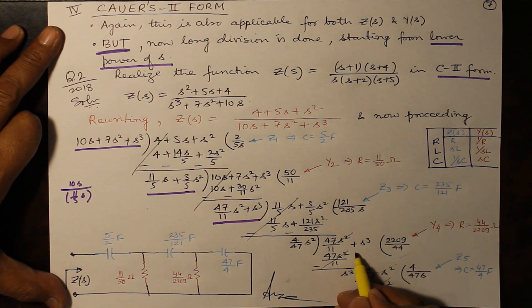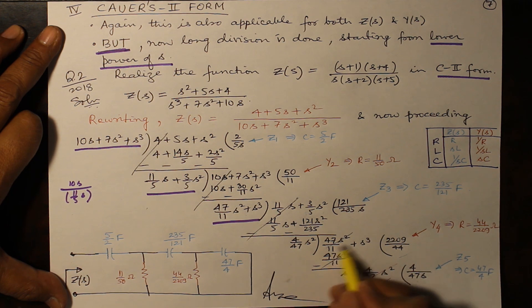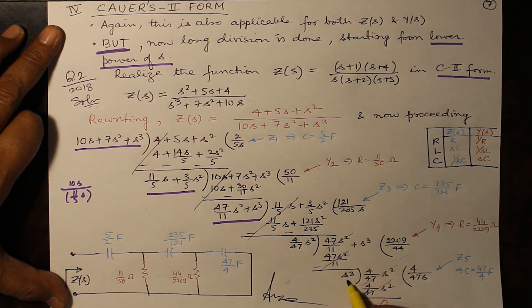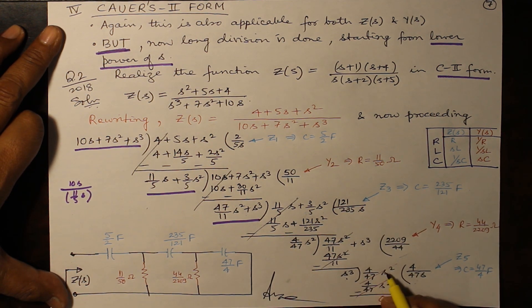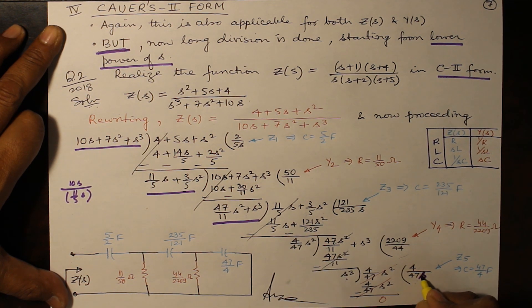First term gets vanished, multiply, subtract, you get this value. Now this comes here and similarly 2209 by 44 can be obtained. First term gets vanished, s³ remains here, which will give you 4 divided by 47s.